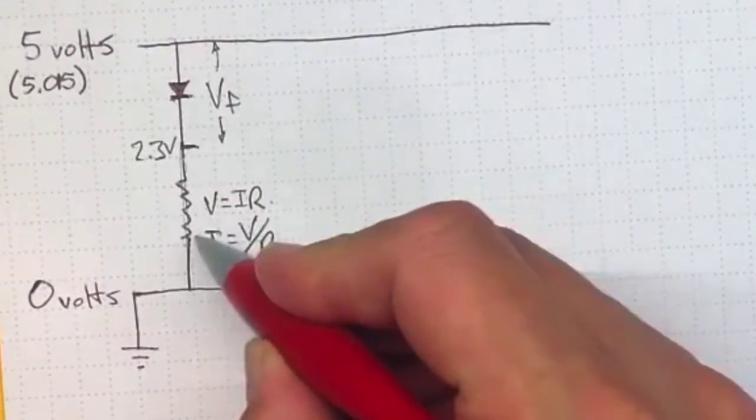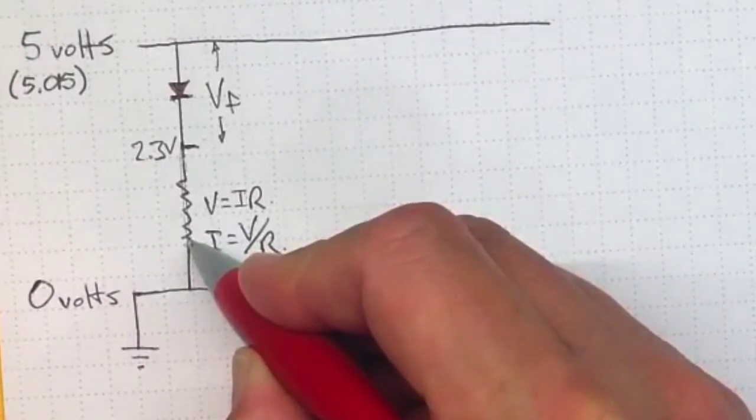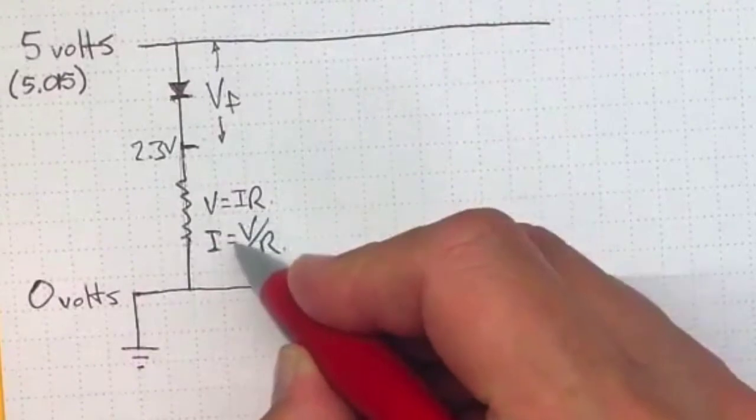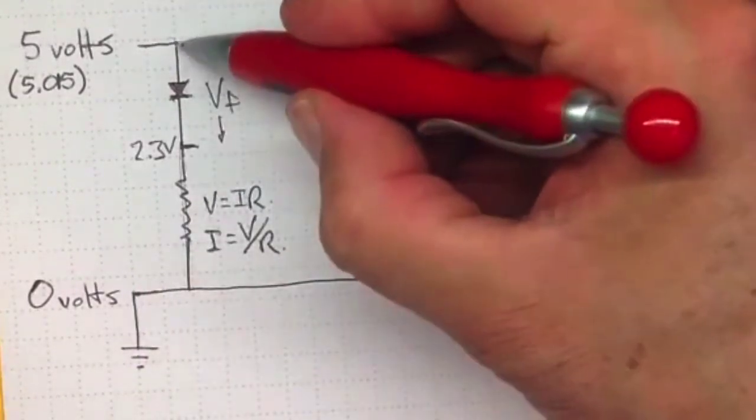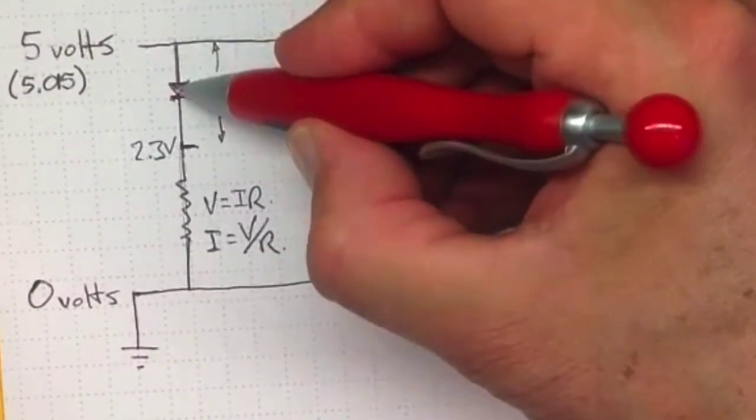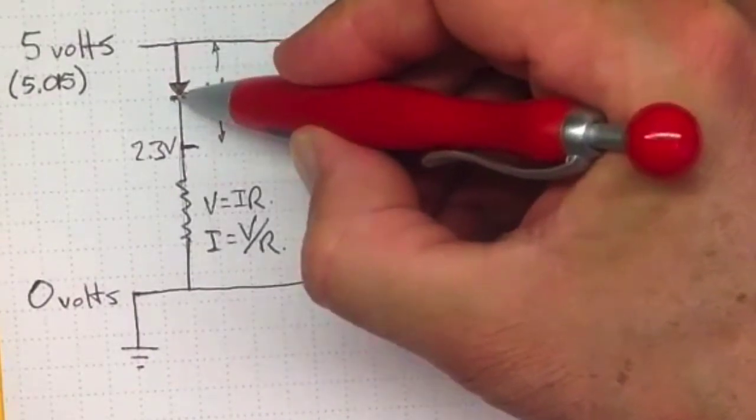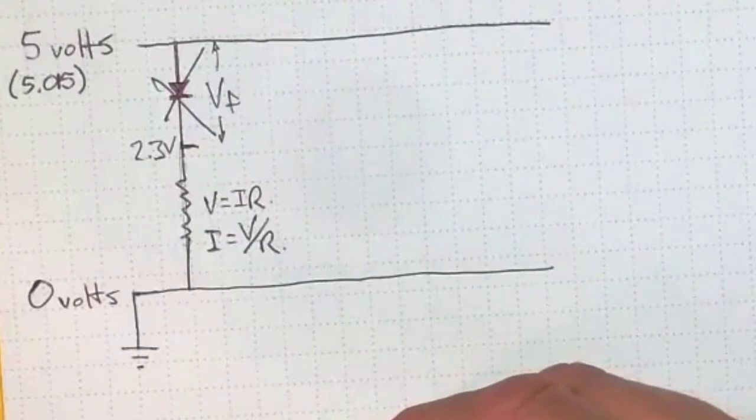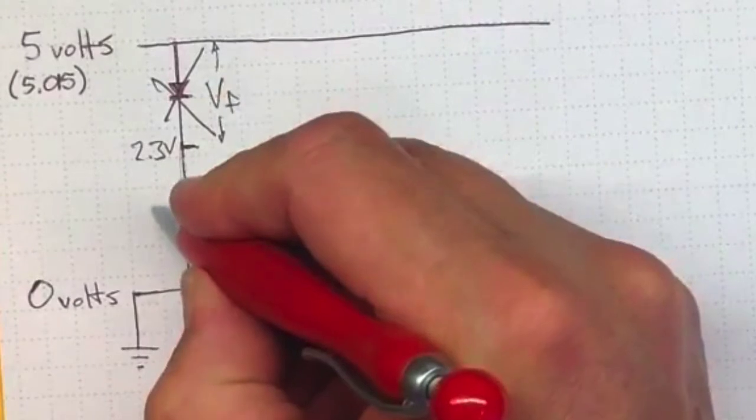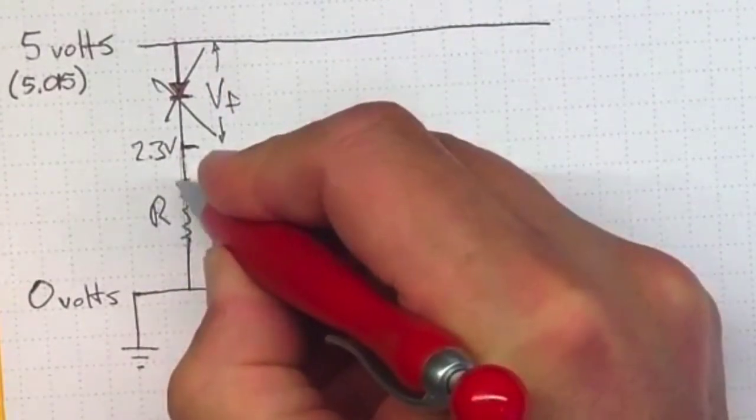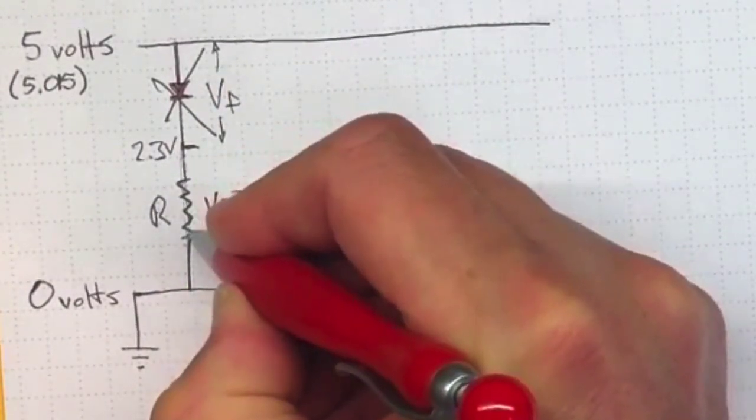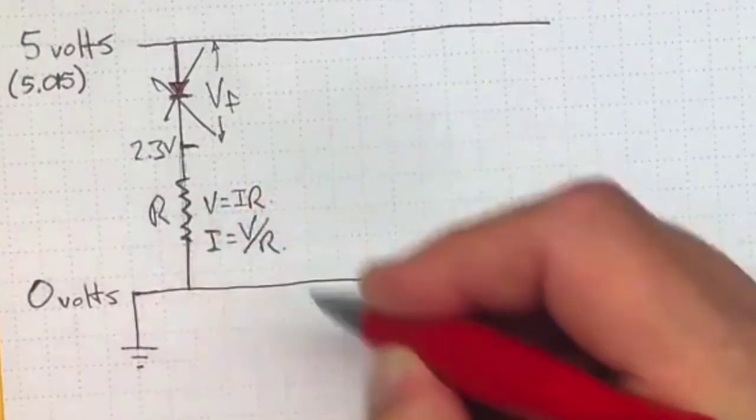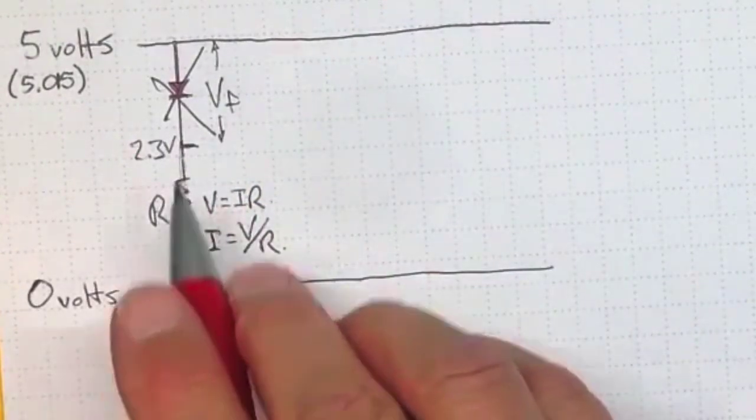So if we made that resistance zero, like I did in the last instance, then the current would go to infinity, at least by this relationship. In fact, what will happen is the more current that goes through here, the diode starts heating and burning up, and eventually it just breaks. Sometimes with a flash, sometimes with a bang. So you need this resistance in here to provide you with a current limit, and you need to figure out for your assignment what that resistance should be.